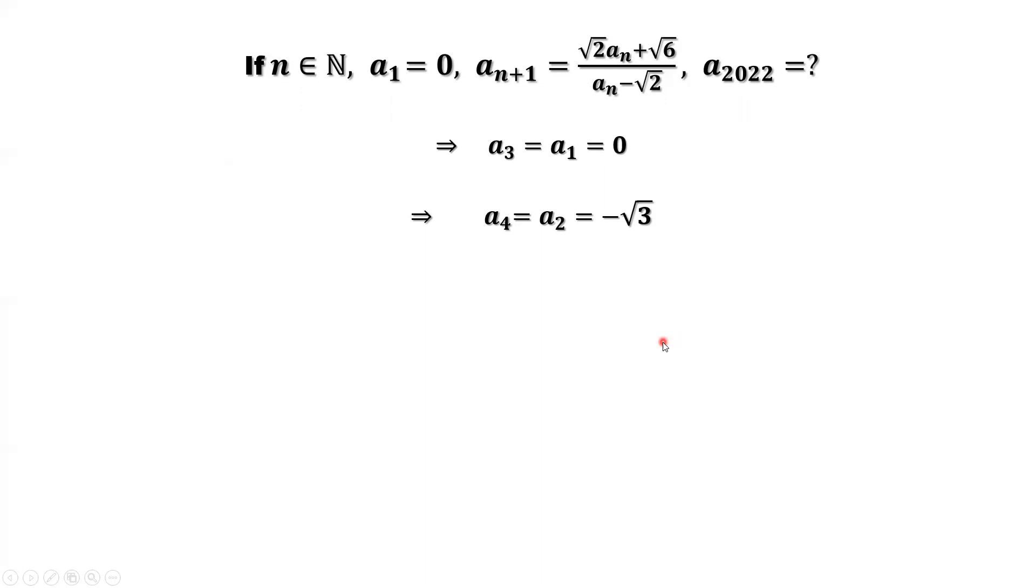So here is the pattern. For the odd term, odd number term, like third term, first term, fifth term. So here K equals zero, it's the original, it's given. So K equals one, here should be A3. A3 equals A1, zero. A5, A7, A9, all equal zero, because that's the recursion.